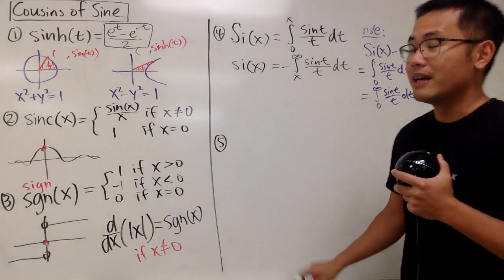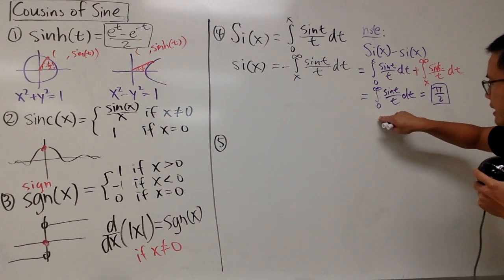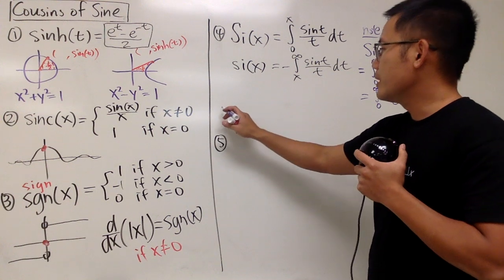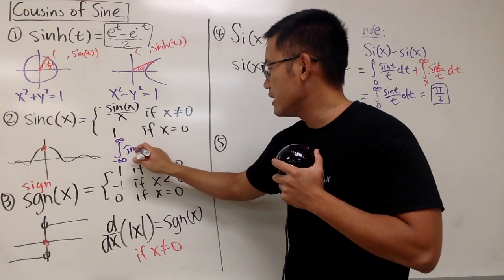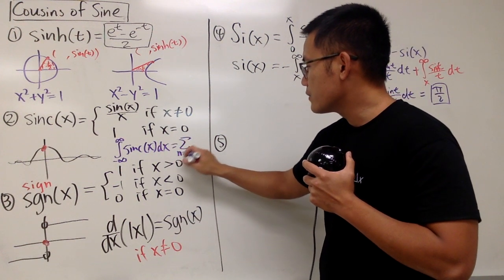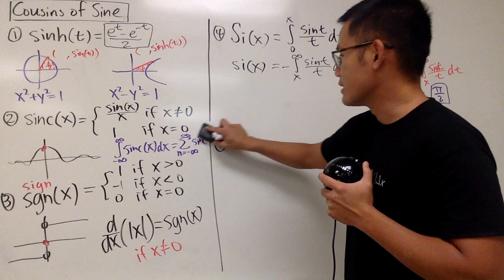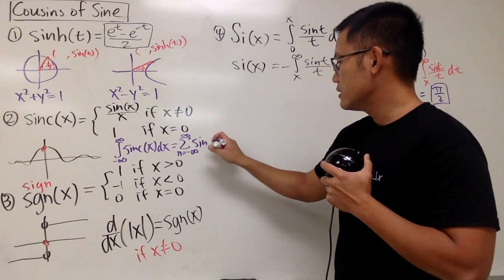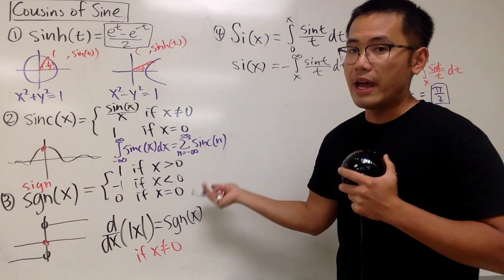Before I get into number 5, let's talk about the sinc function one more time. Because we end up with pi over 2, if you go from negative infinity to positive infinity — since sinc is an even function — you can just double that and get pi. Another really cool thing: if you integrate sinc(x) from negative infinity to positive infinity, this equals the sum as n goes from negative infinity to positive infinity of sinc(n). Both give you pi.